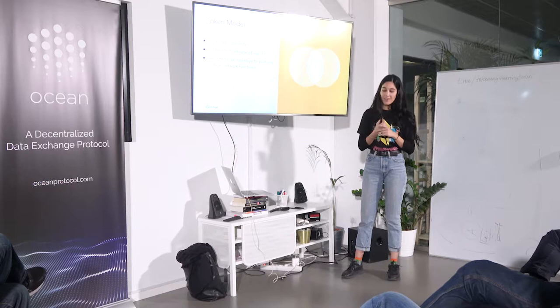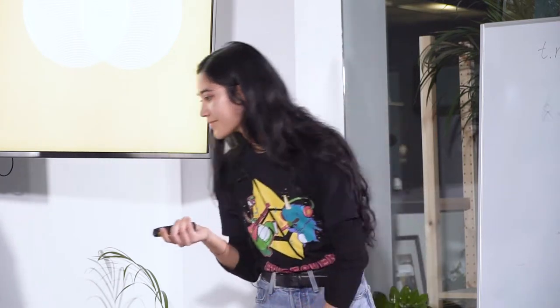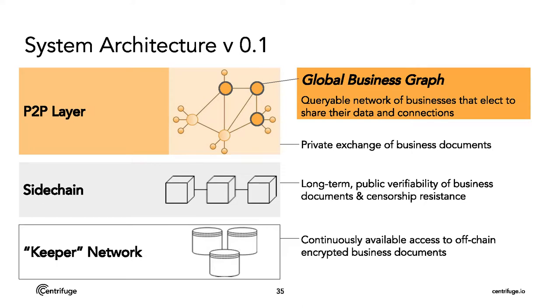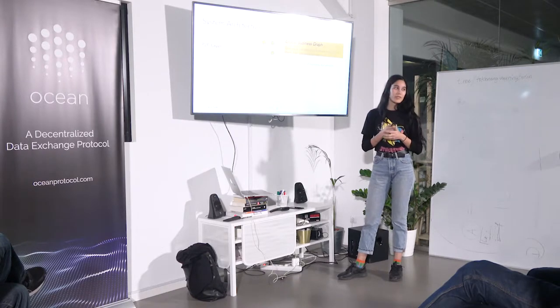To note again what the token is not: it is not providing an extra incentive to use Centrifuge. We think businesses want to use Centrifuge because it's useful, and we're not trying to draw them to use this platform. The system architecture in our first version of the platform starts with the peer-to-peer layer. This is where businesses are privately exchanging business documents, and within the peer-to-peer layer is where we have the global business graph.